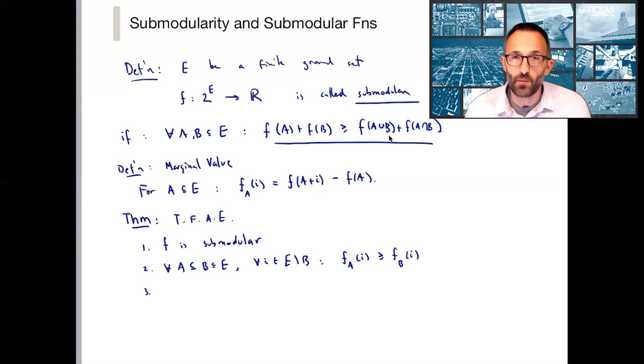And there's an even more local way of stating this, exactly this property. And basically it says that for any set A and for any set B that's A plus any other element, this property holds. So in other words, for any set A that's a subset of E, and for any elements i and j that are in E but not A,